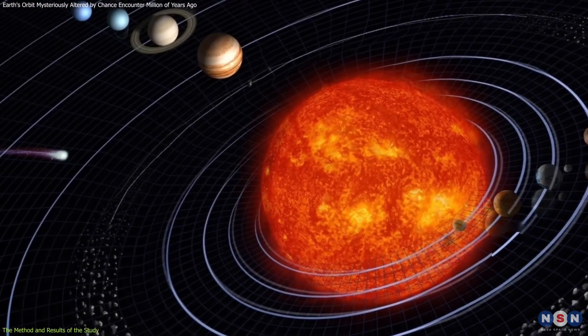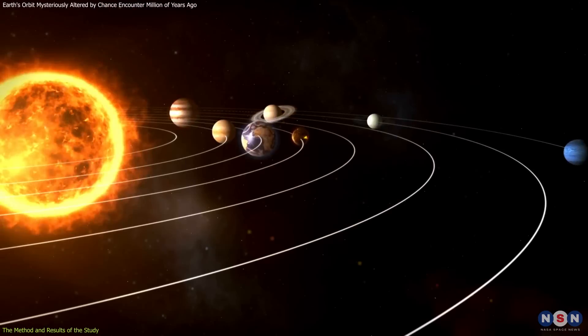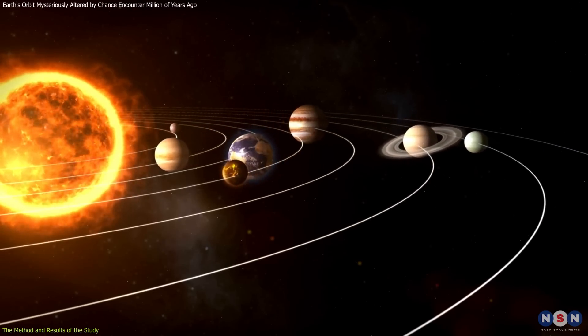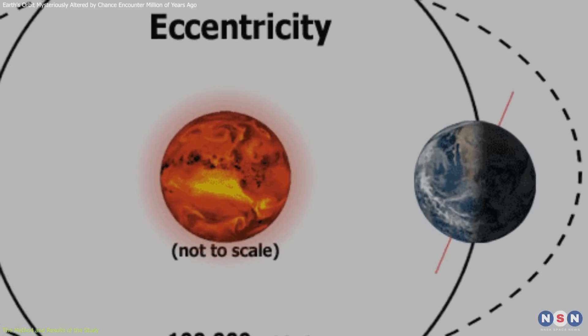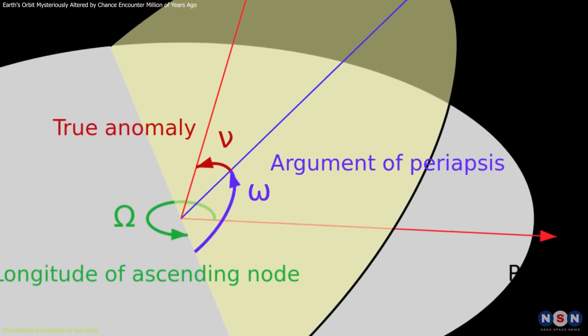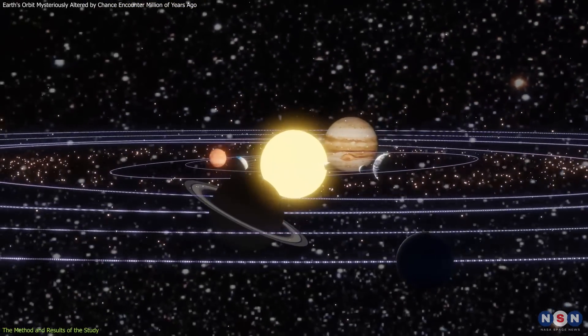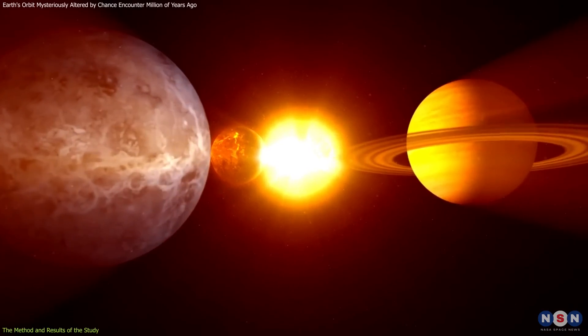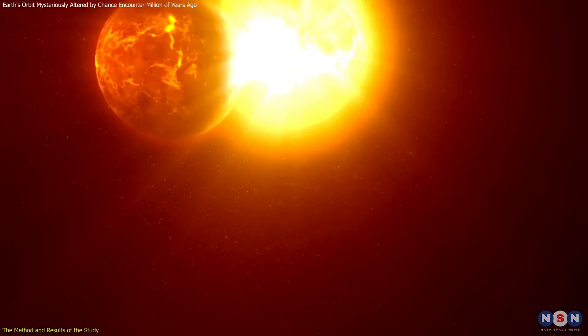The researchers wanted to see if a passing star could have disturbed the orbits of the planets, changing their eccentricity and inclination. Eccentricity is a measure of how elliptical an orbit is, and inclination is a measure of how tilted an orbit is relative to the plane of the solar system. These orbital parameters affect the amount of solar energy that a planet receives, and thus influence its climate.